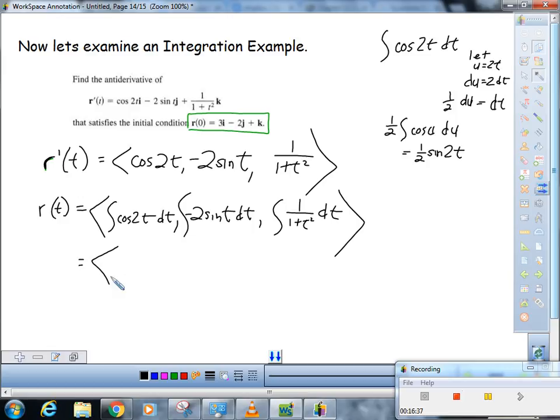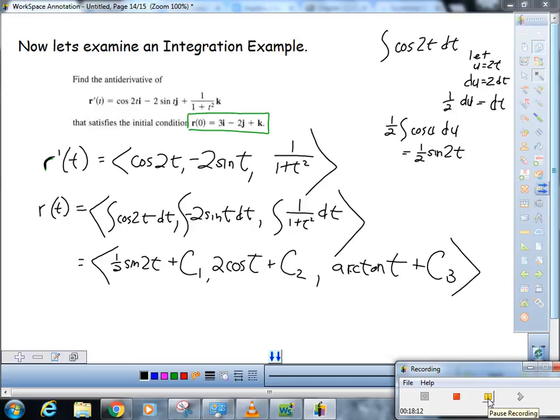So our r of t will equal 1 half sine of 2t. Now remember, there could have been a constant here. The integral of negative 2 sine is positive 2 cosine. There also could have been a constant there. So now we've got to keep our constants straight. We're going to call that second constant C2 and the first constant C1. And the integral of 1 over 1 plus t squared, you might have to go to the green sheet on that one. That is the arctan of t plus, and we could have had some other constant there, C3.